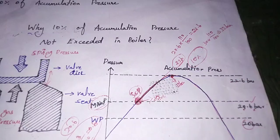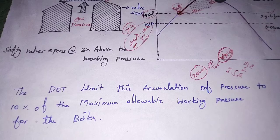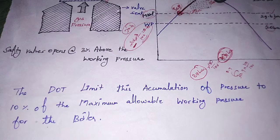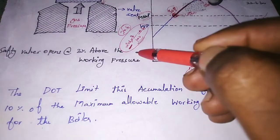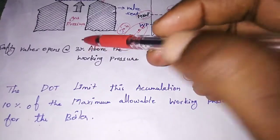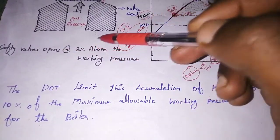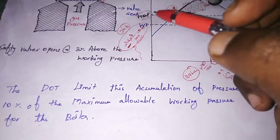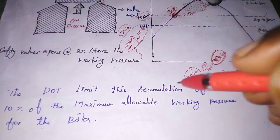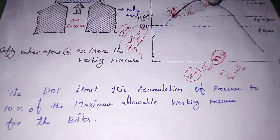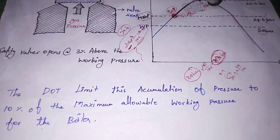All boilers are set to a 10 percent accumulation pressure limit. The Department of Trade limits accumulation pressure to 10 percent of the maximum allowable working pressure for the boiler. Note that setting the safety valve 3 percent above working pressure is not common for all boilers — it varies — but the 10 percent accumulation pressure limit is common for all boilers.